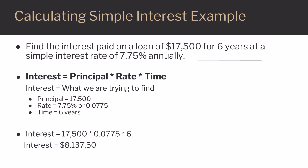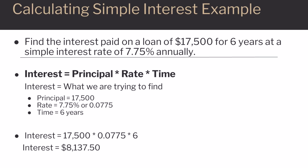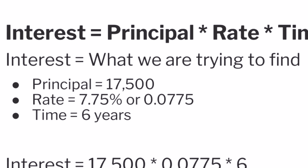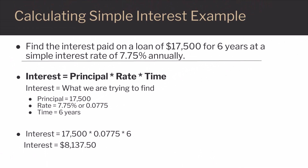Let's do another example. Say we borrow $17,500 for 6 years at a simple interest rate of 7.75% per year. How much interest is paid? Using the formula Interest equals Principal times Rate times Time.